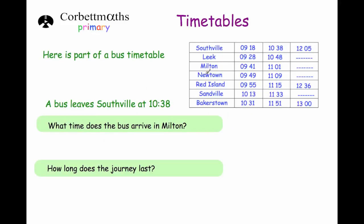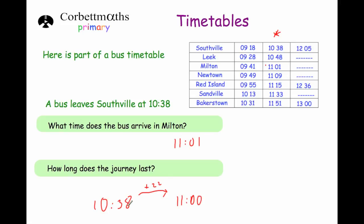We've got the same timetable and it says a bus leaves Southville at 10.38, so we're looking at this bus here. The question says at what time does the bus arrive in Milton — as we see here, in the second column it arrives at 11.01. The question then says how long does the journey last. If it leaves Southville at 10.38, adding 22 minutes brings us to 11 o'clock, and then another one minute brings us to 11.01, so altogether the journey has lasted 23 minutes. The journey from Southville to Milton lasts 23 minutes.